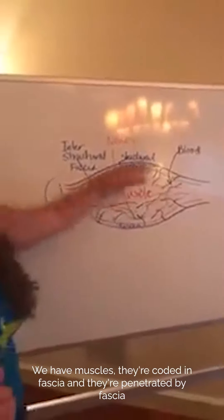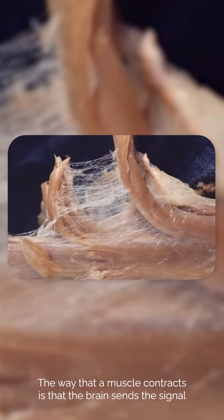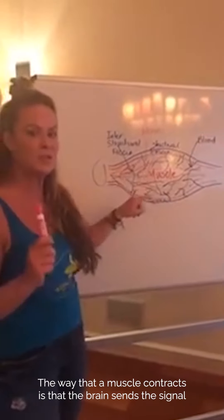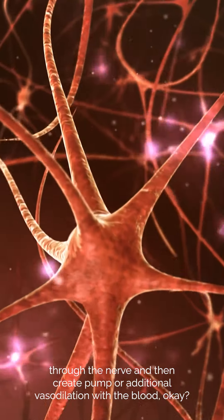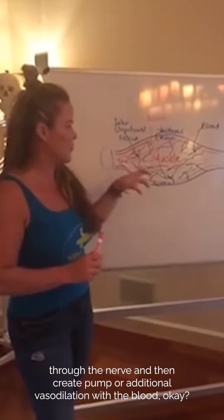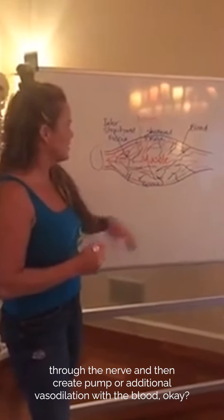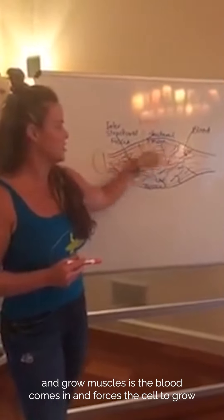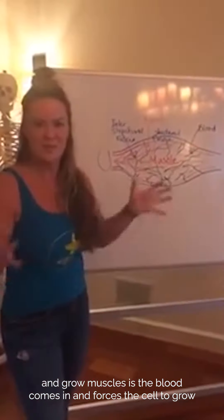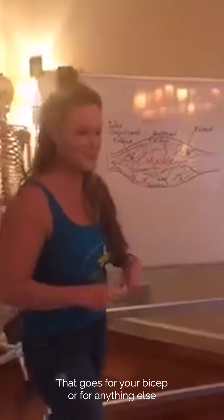We have muscles — they're coated in fascia and penetrated by fascia. The way a muscle contracts is that the brain sends the signal through the nerve and then creates a pump or additional vasodilation with the blood. That's actually how we condition and grow muscles: the blood comes in and forces the cell to grow. That goes for your bicep or for anything else.